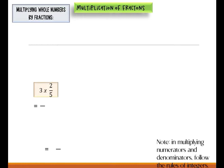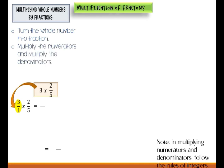The whole number is 3, so the first thing to do is turn the whole number into a fraction. So 3 will become 3 over 1, times 2 over 5. Then we will multiply the numerators and multiply the denominators — numerator by numerator, denominator by denominator. So we have 3 times 2 is equal to 6, and 1 times 5 is equal to 5, so 6 over 5.